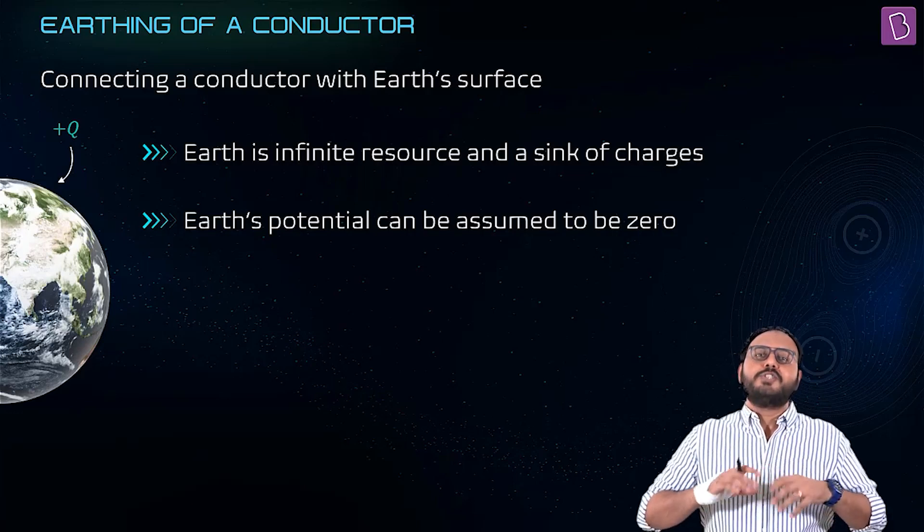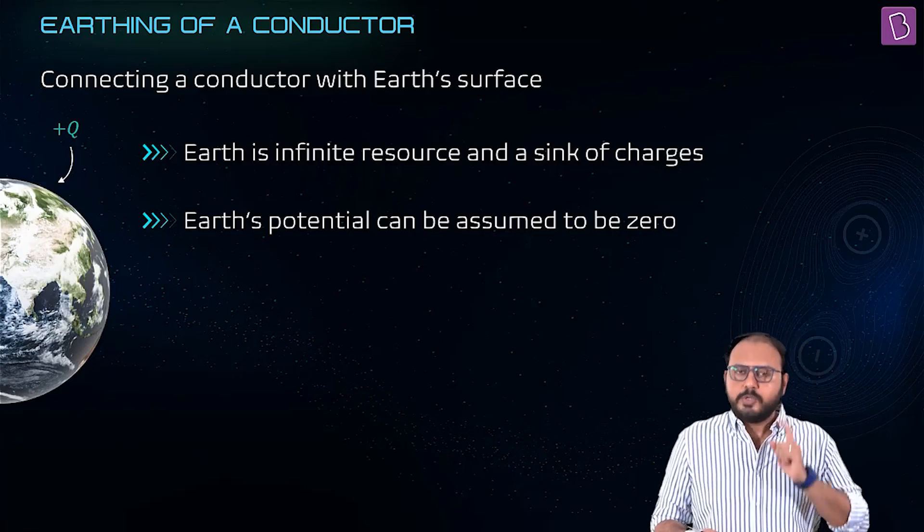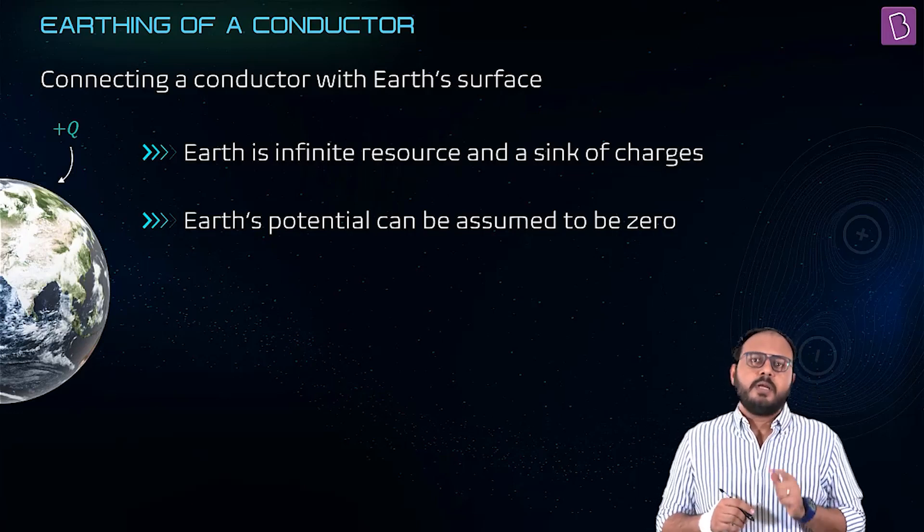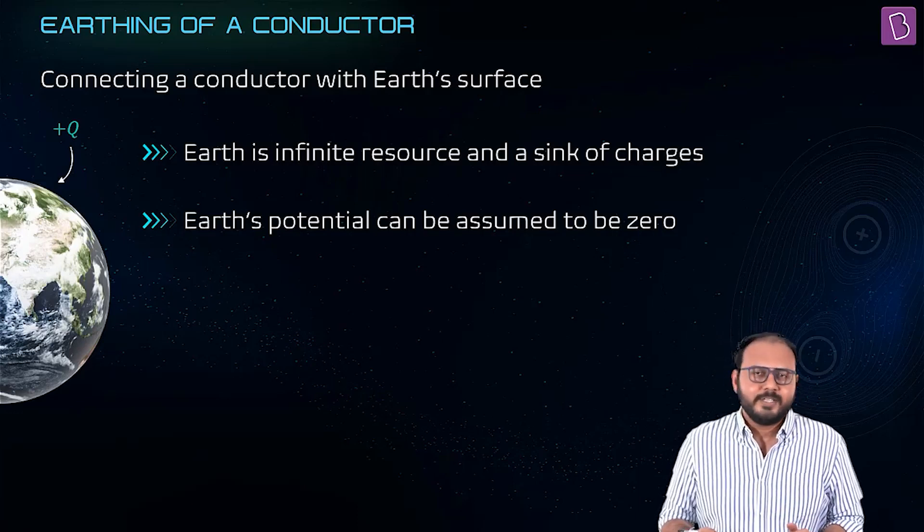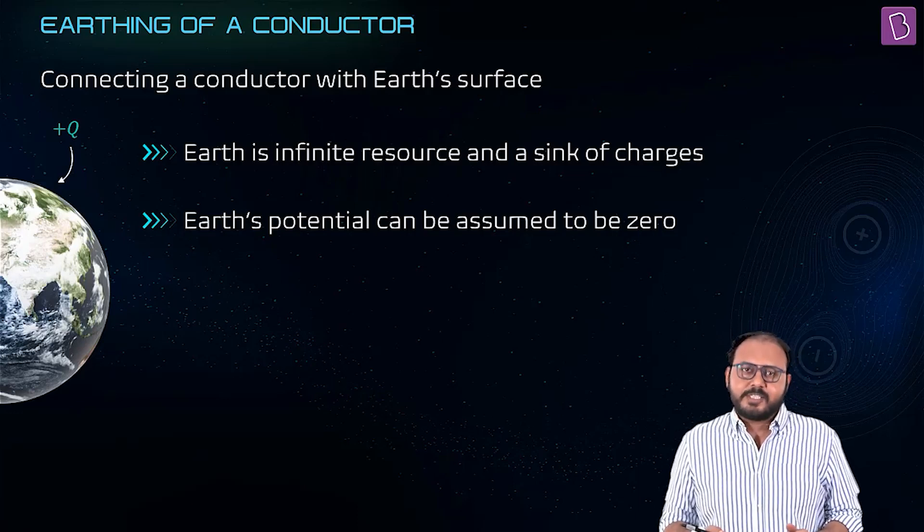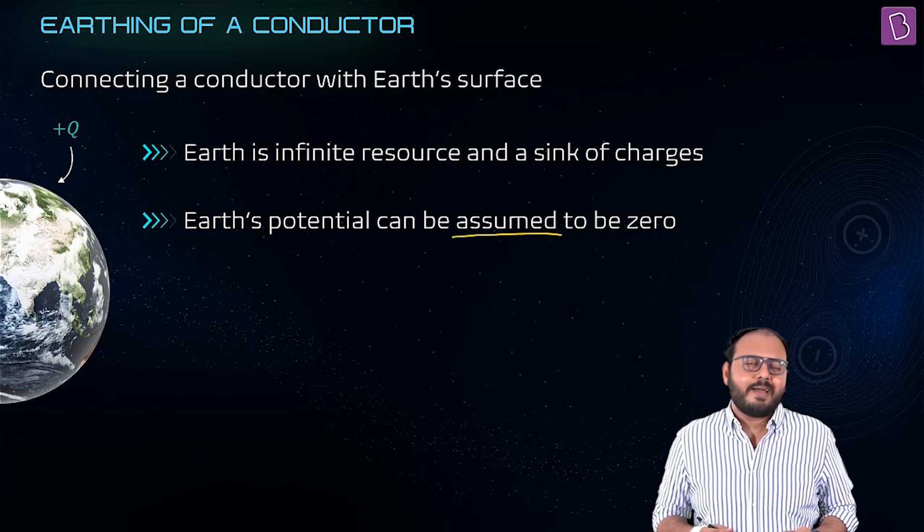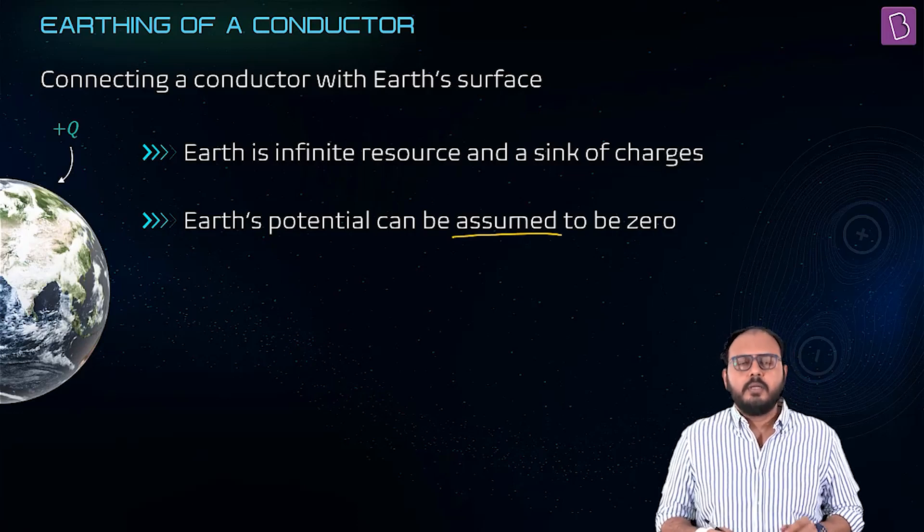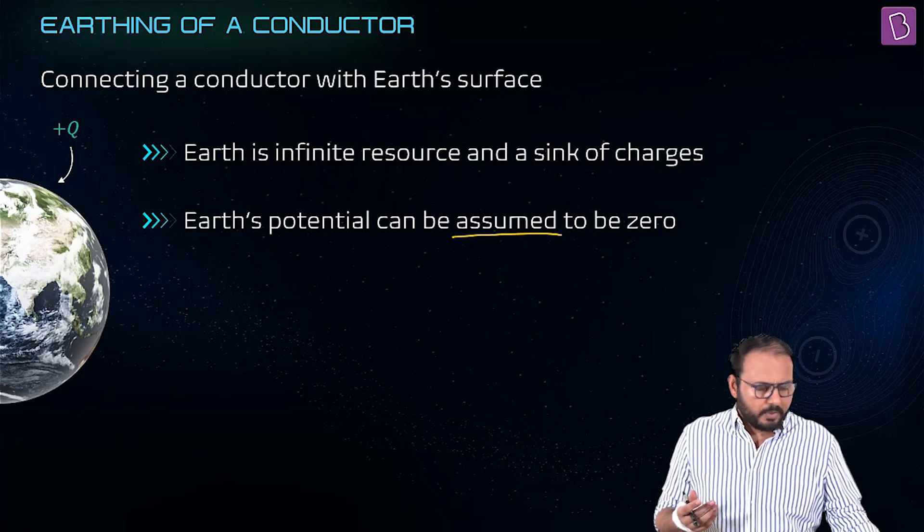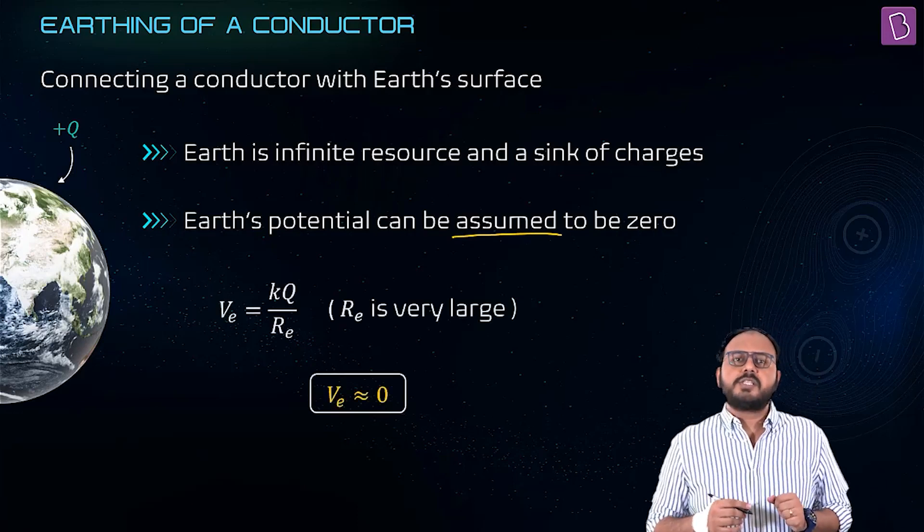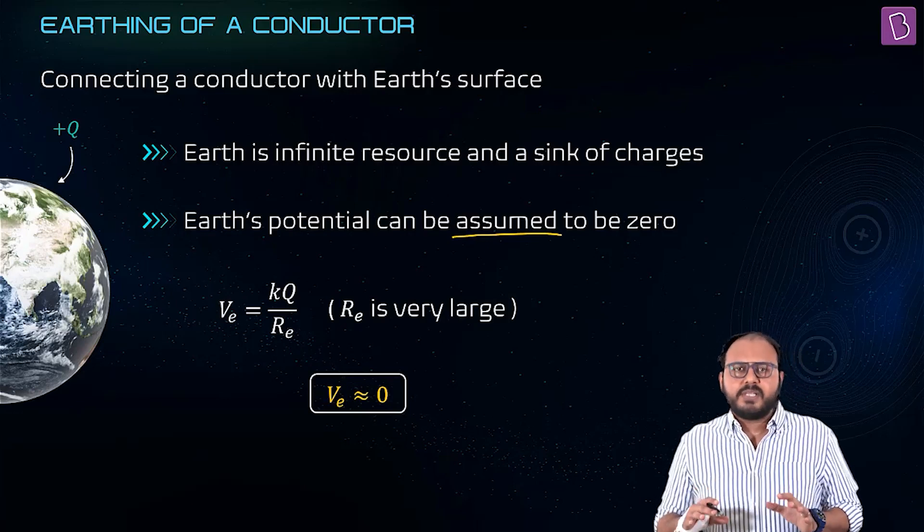Earth's potential can be assumed to be zero. The keyword here is assumed. If somebody says earth's potential is zero - no, inaccurate. Earth's potential is taken to be zero. But why?